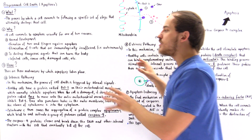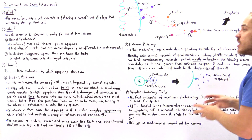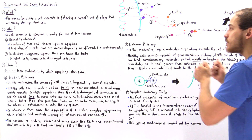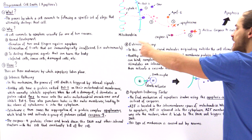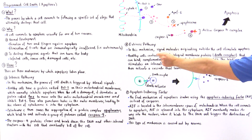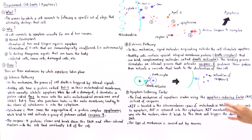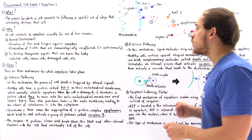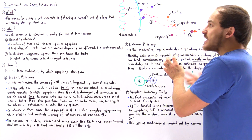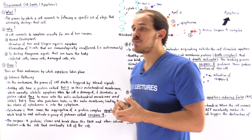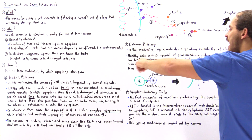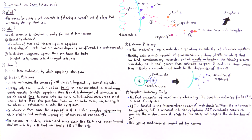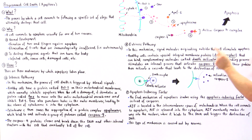What about the extrinsic pathway? The major difference between the intrinsic and the extrinsic pathway is that in the extrinsic pathway, the origin is outside of the cell. The signal molecules originate outside of the cell and stimulate that cell to commit suicide. So it begins on the outside, but apoptosis takes place on the inside. Healthy cells contain special integral membrane proteins known as DEF receptors, which can bind complementary molecules known as DEF activators.